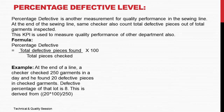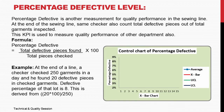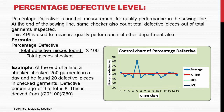For example, at the end of a line, a checker checked 250 garments in a day and found 20 defective pieces. The defective percentage of that lot is 8%, derived from 20 multiplied by 100 divided by 250. Below is a control chart of the sewing line showing percentage defective over a period of 15 days, where some processes are going above the upper limit and this needs to be corrected.